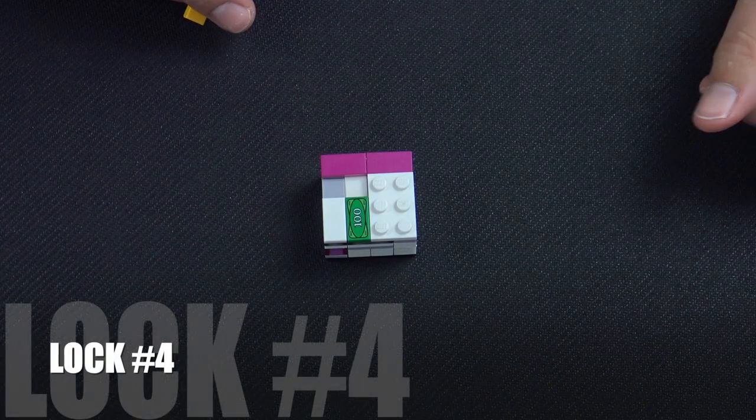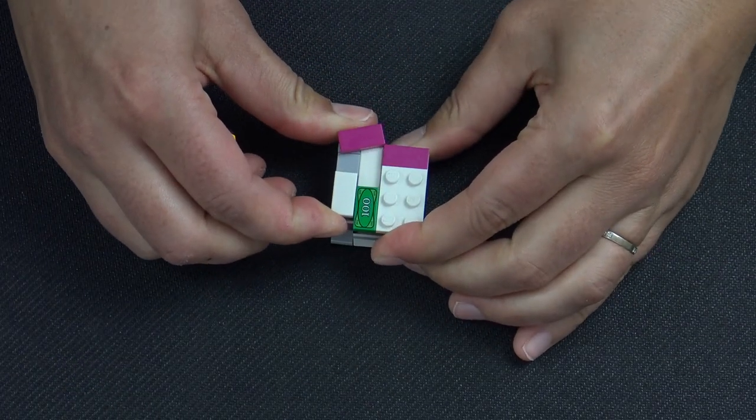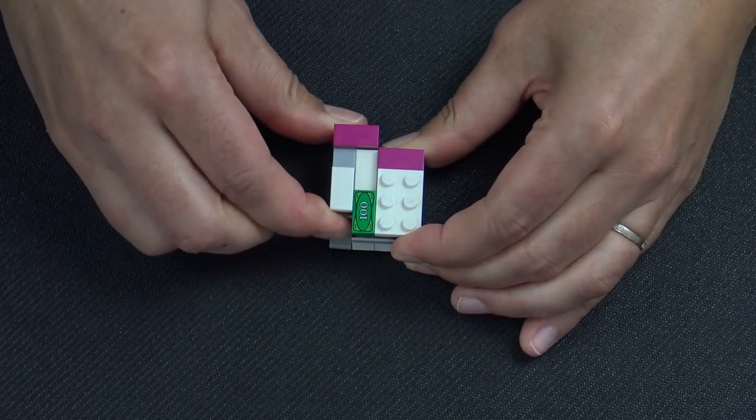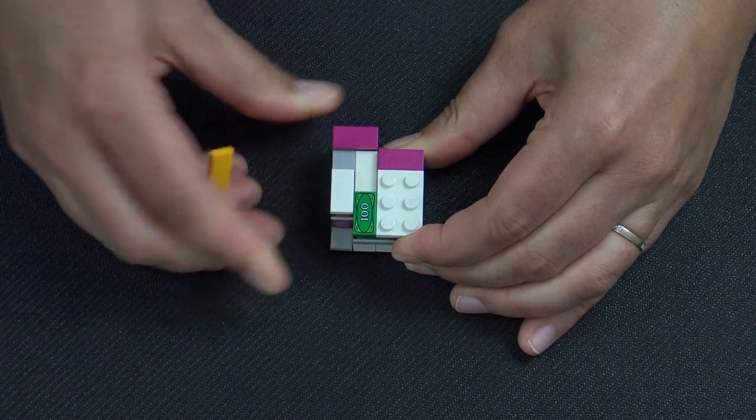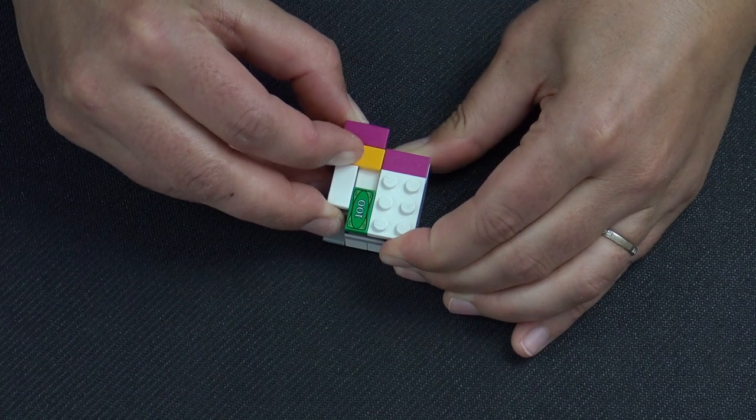All right, lock number four. This one also has a sliding side like this. You have to imagine that this is on the interior of a puzzle box, and if I use my tool, my tool isn't that helpful.